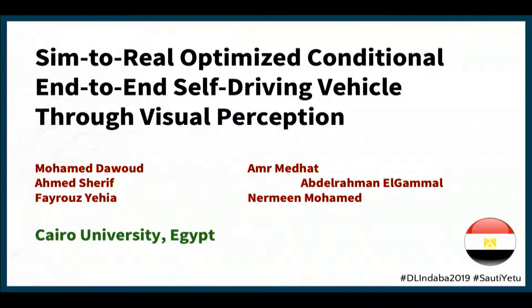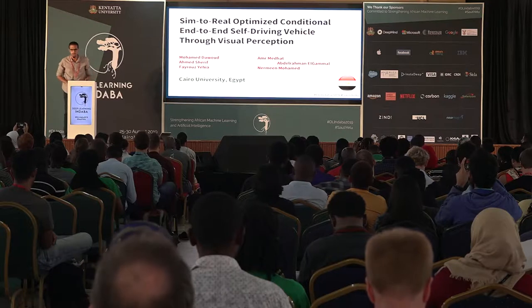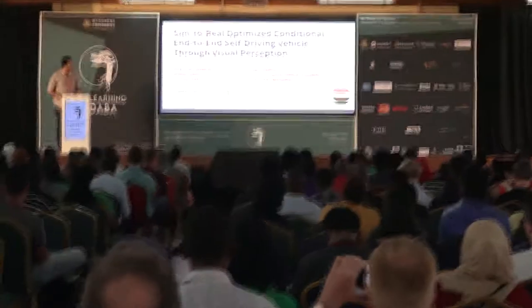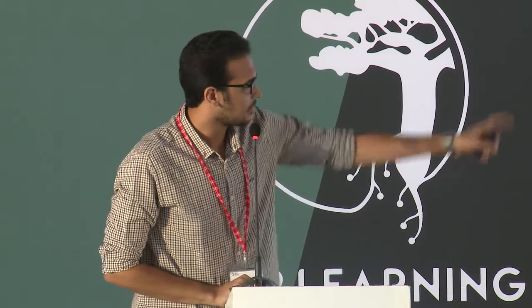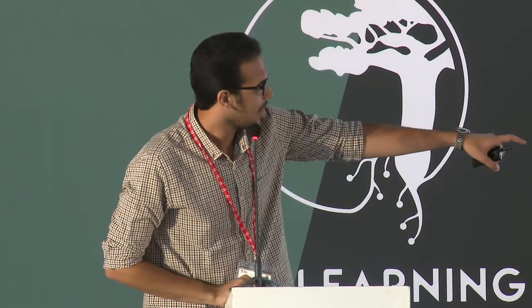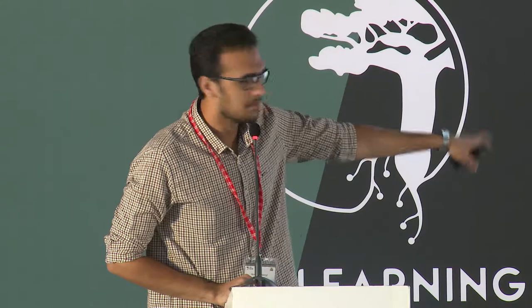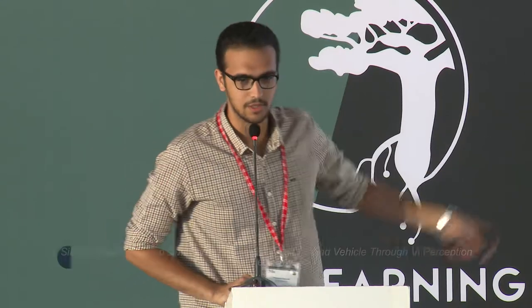Our project's name is SimTouril: Optimized Conditional End-to-End Self-Driving Vehicles Through Visual Perception. I'm Mohamed Dawood, and we have Amr Methat, Fayrouz Yahya, Rameen Mohamed, and our two colleagues Abdelrahman El-Gamal and Ahmed Sharif, but they are in Egypt.